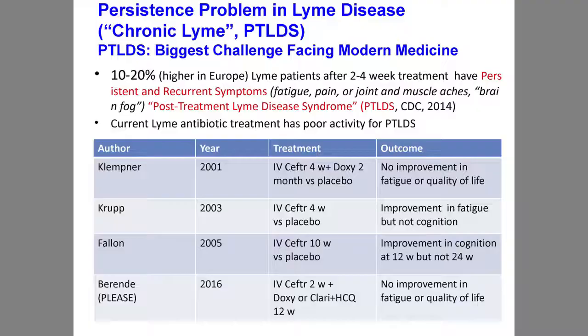Most controversy surrounding Lyme disease is because of PT-LDS. It's defined as a condition where, despite standard antibiotic treatment of Lyme disease, patients continue to have symptoms six months after treatment. Some studies demonstrate activity of the antibiotics while others did not. But this actually suggests something to do with persistent infection, because otherwise how would antibiotics have any effect? If the organism is not there, or it's not a persistent infection, antibiotics would have no effect.